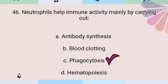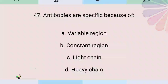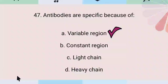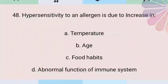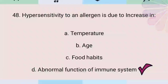Neutrophils help immune activity mainly by carrying out phagocytosis. Antibodies are specific because of the variable region. Hypersensitivity to an allergen is due to an abnormal function of the immune system.